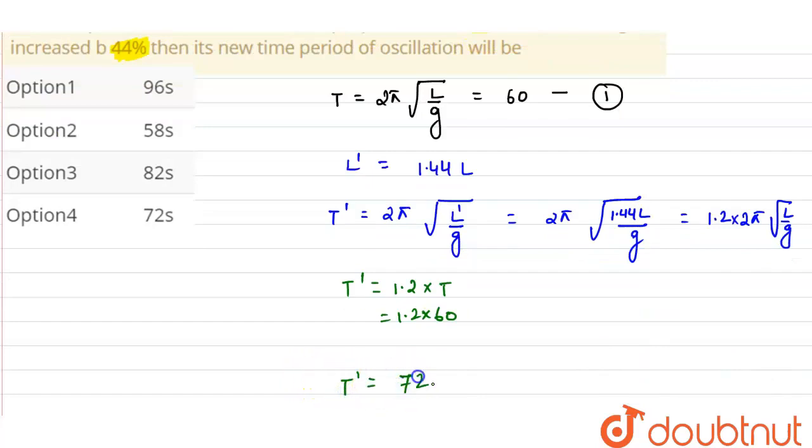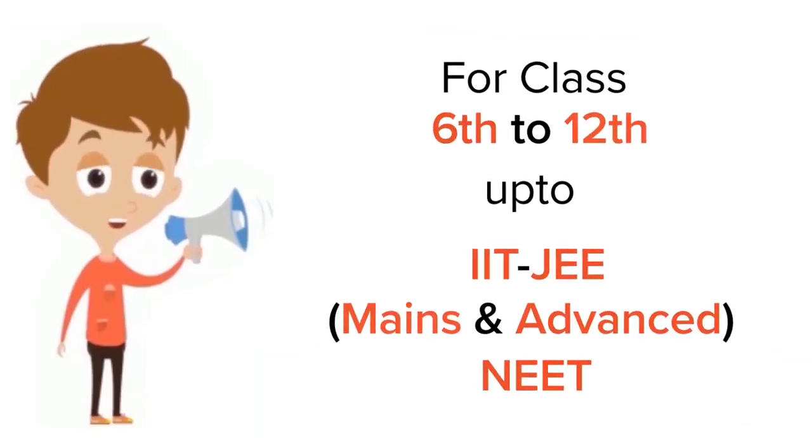So T dash from here comes out as 72 seconds. Okay, so option 4 is correct.